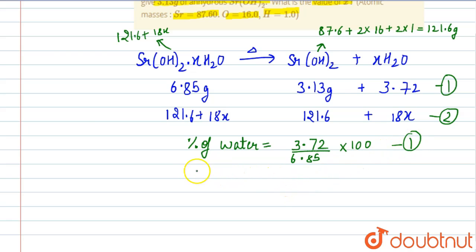From equation number two, the percentage of water will be 18x over 121.6 plus 18x into 100.